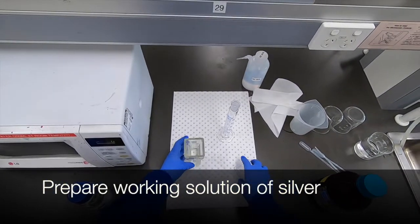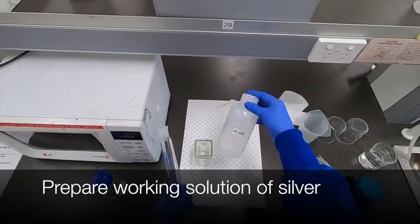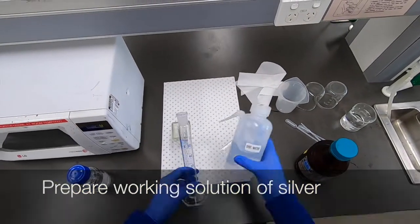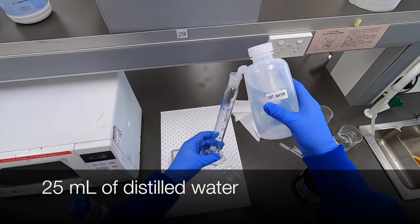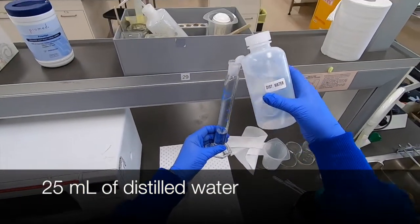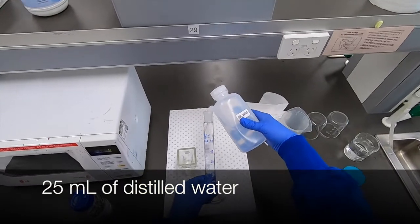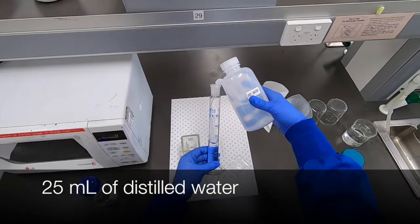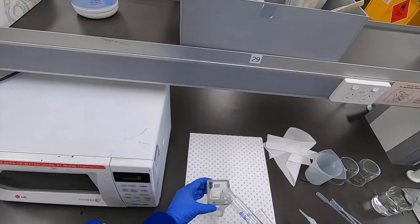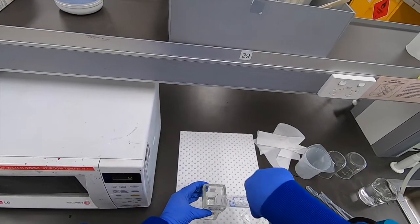So this is a lot simpler than preparing the ammonical silver as was demonstrated for the Gordon and Sweet protocol. So to make up a total of 50ml we start with 25ml of distilled water and we place that into a glass Coplin jar.